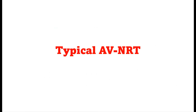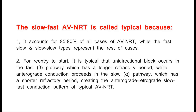Typical AVNRT — the slow-fast type — is called typical for two reasons: first, it accounts for 85–90% of all AVNRT cases; second, for re-entry to start, it is typical that unidirectional block occurs in the fast (beta) pathway, which has a longer refractory period, while anterograde conduction proceeds in the slow (alpha) pathway, which has a shorter refractory period, creating the anterograde-slow, retrograde-fast conduction pattern of typical AVNRT.